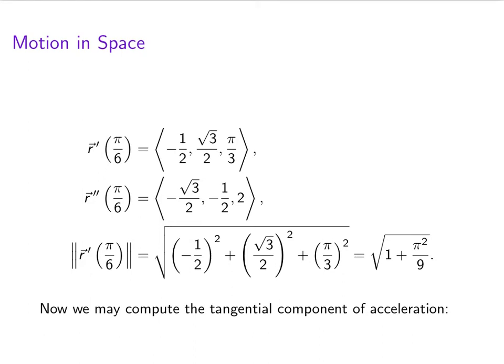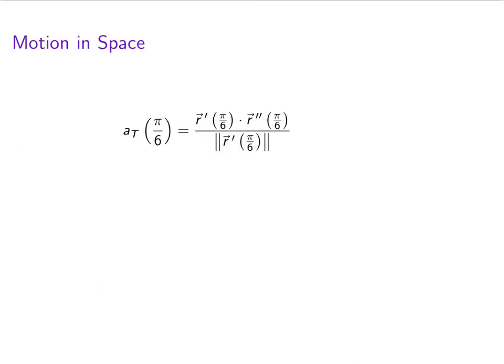And now we're in a position to be able to compute the tangential component of acceleration. It will be r prime at pi over 6 dotted with r double prime at pi over 6 divided by the length of r prime at pi over 6. Let's put in those vectors. We already computed the length of r prime at pi over 6. It's square root of 1 plus pi squared over 9.